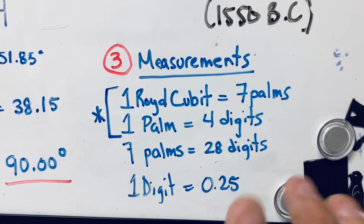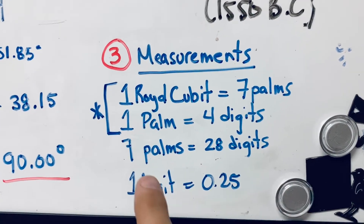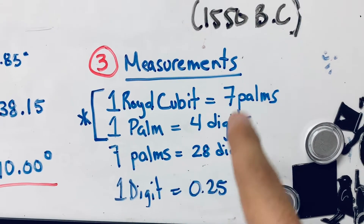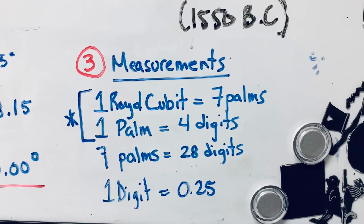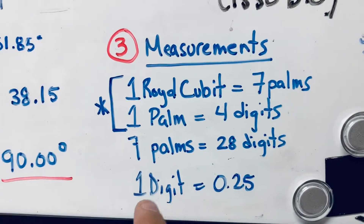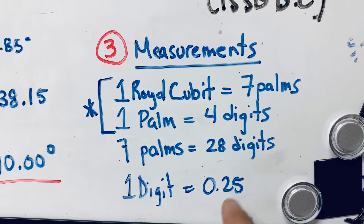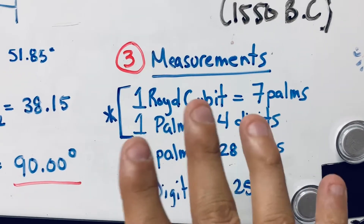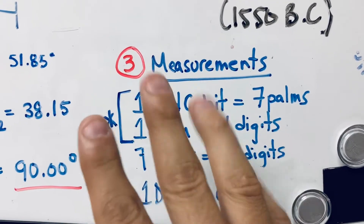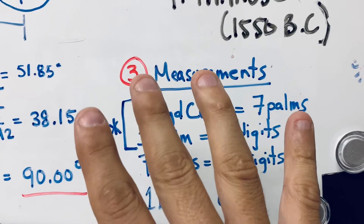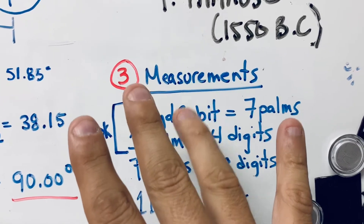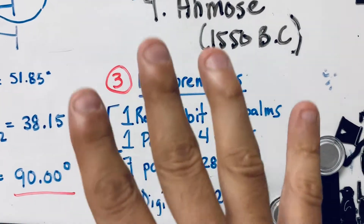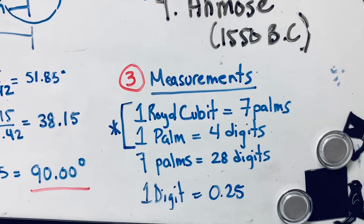Seven palms is 28 digits because seven times four is 28. One digit is equal to 0.25 — because one digit, there are four in a palm, so 0.25, 0.5, 0.75, and finally one. So one digit is divided into four.